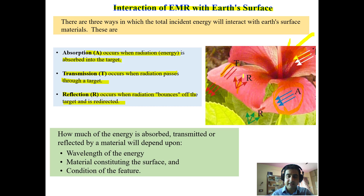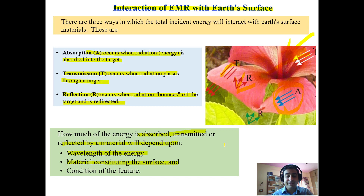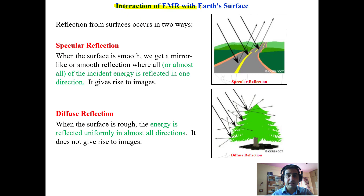How much energy is absorbed, transmitted, or reflected depends on three factors: the wavelength of the incident energy, the material constituting the surface — whether it is water, a hard surface, or vegetation — and the condition of the feature, such as whether it is rough, smooth, wavy, or of a different geometric shape.